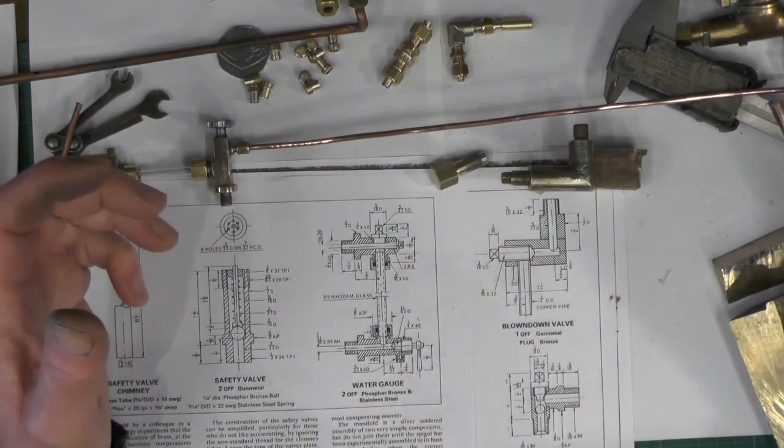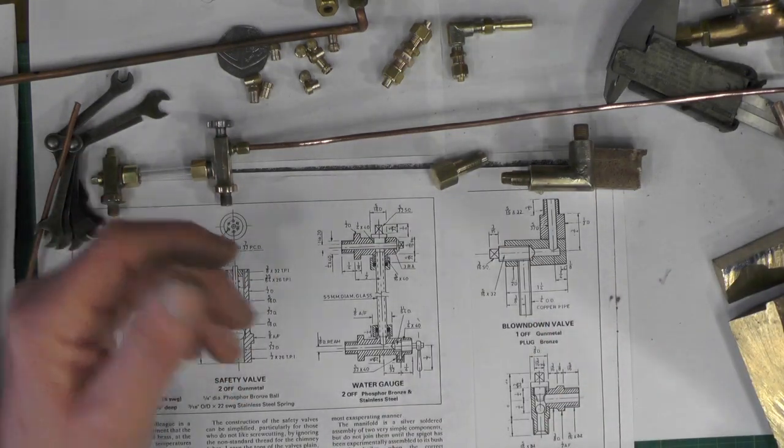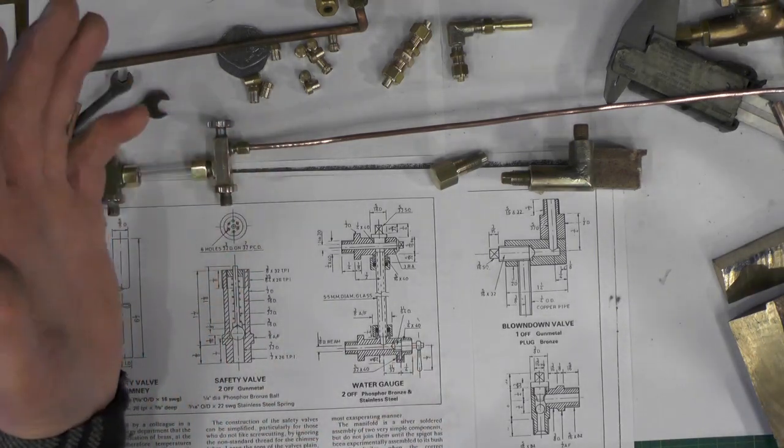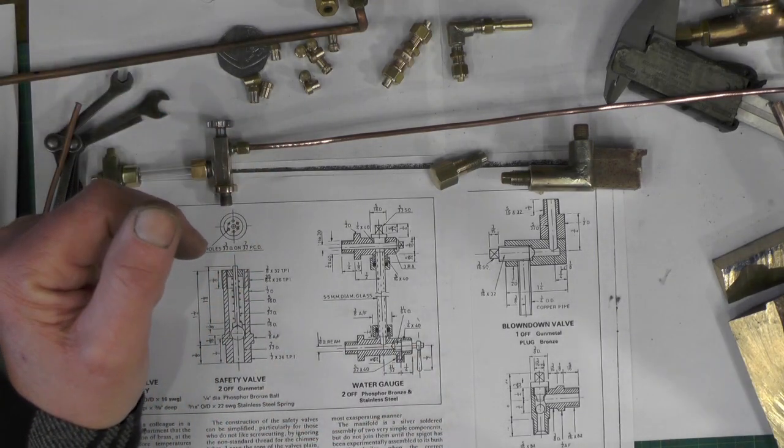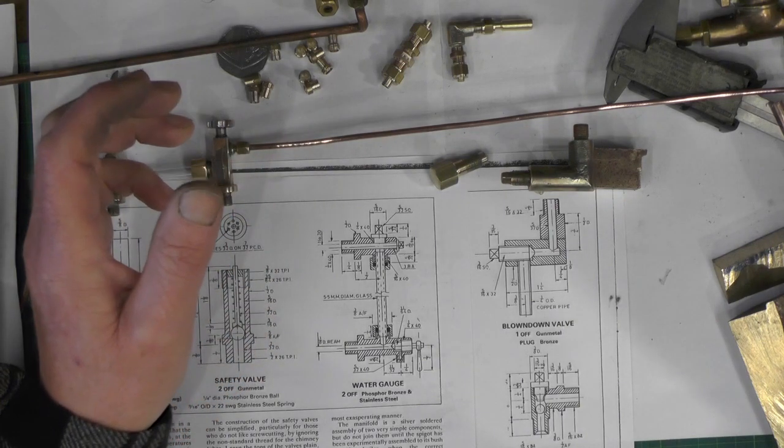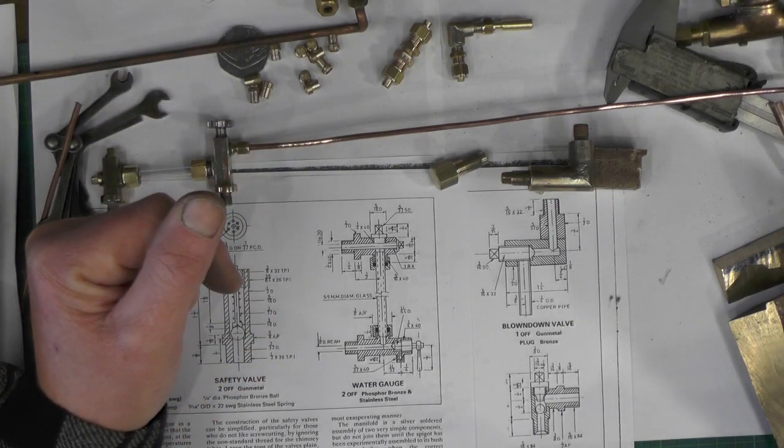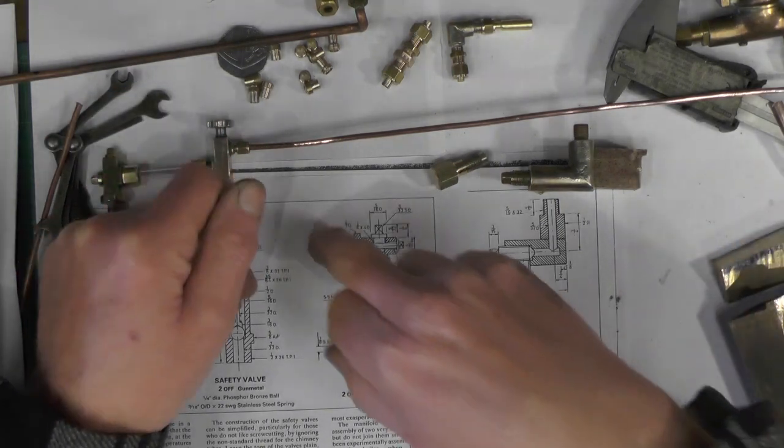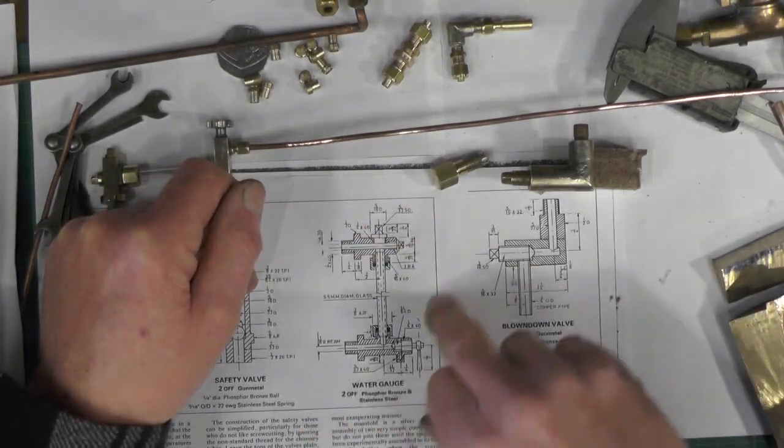But I've managed to find these from the Model Engineer which featured this Sweet Pea book at some time. You'll find that in Model Engineer index if you just take a look on internet and put in Sweet Pea. So these are the drawings then for the water gauge and the blow down valve.